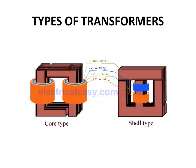There are two types of transformers: core type and shell type. In the core type, both primary and secondary windings are placed on two limbs — the right and left limbs. There are two layers: the high voltage winding and the low voltage winding. In the shell type, instead of placing the windings on the two outer limbs, the windings are placed on the central limb — both the high voltage and low voltage windings.